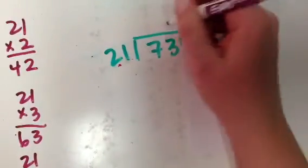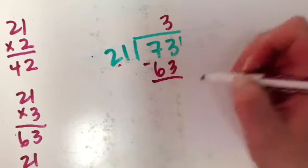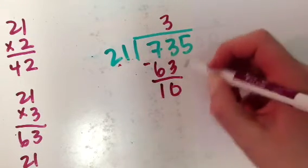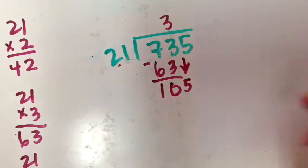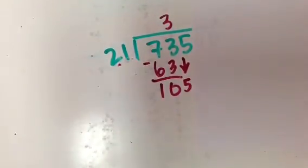Yep, 84, too big. So it's going to go 3 times, which is 63 I figured out. I have 10 left over. Drop the 5 down. So now, can 21 go into 105? Again, I'm going to do some figuring here.